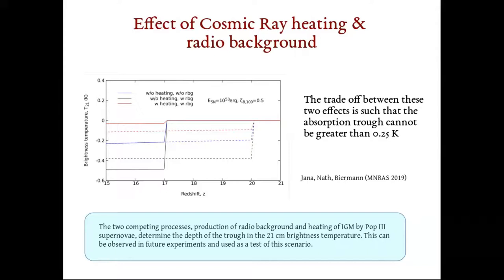So, there are two competing processes. The production of radio background by cosmic ray electrons increases the depth of the trough and the heating of IGM by cosmic ray protons decreases the depth of the trough. The trade-off between these two effects is such that the absorption trough cannot be greater than 0.25 K.